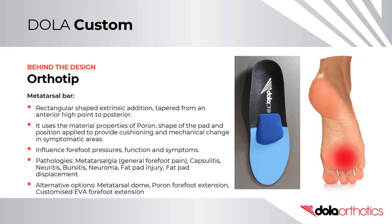Ortho Tip – A Metatarsal Bar is a rectangular-shaped extrinsic addition, tapered from an anterior high point to a posterior low point. It uses the material properties of Poron and the shape and position of the pad to provide cushioning and mechanical change in symptomatic areas. It can influence forefoot pressures, forefoot function, and symptoms. Common pathologies include metatarsalgia, capsulitis, neuritis, bursitis, neuroma, fat pad injury, or fat pad displacement. Alternatives include a Metatarsal Dome, a Poron forefoot extension, or a customised EVA forefoot extension.